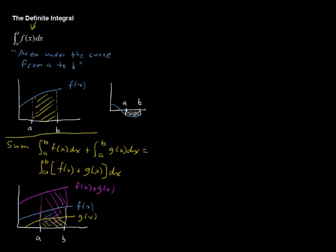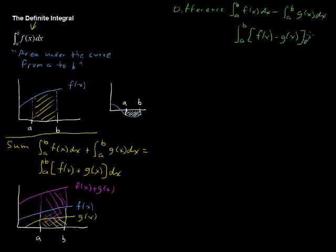Then the other way we can do that is subtracting it. We could say the difference of these two. If we have the difference, that is the integral from a to b of f of x dx, and you subtract the integral from a to b of g of x dx,